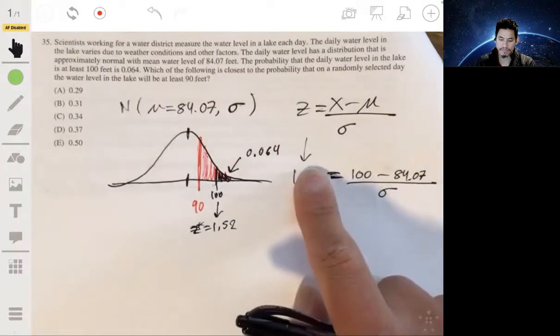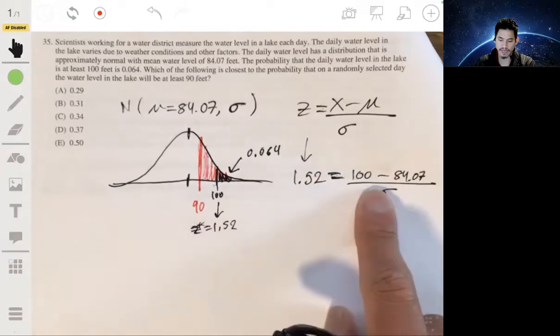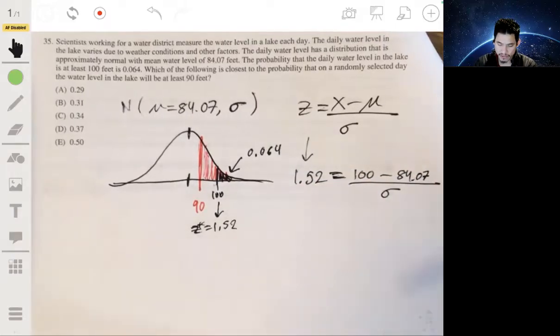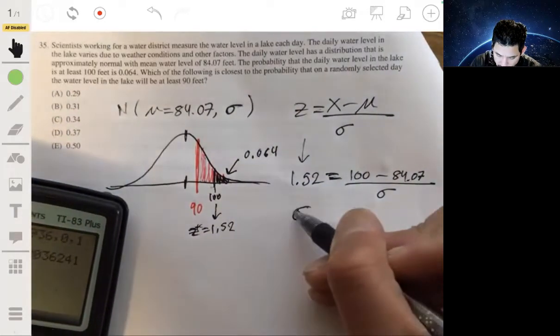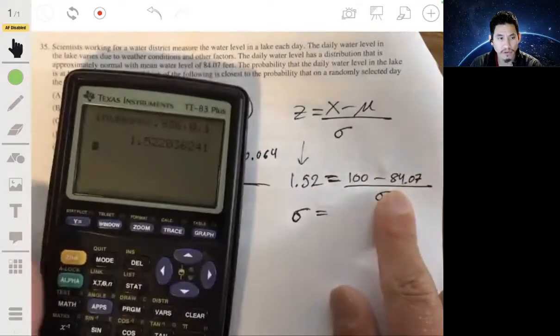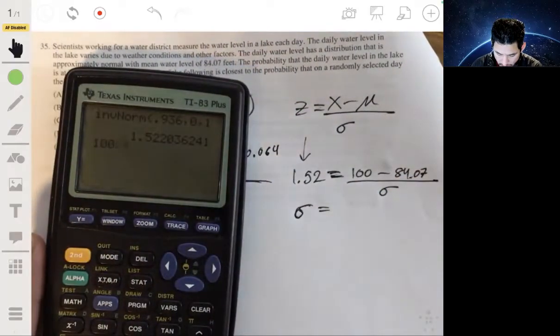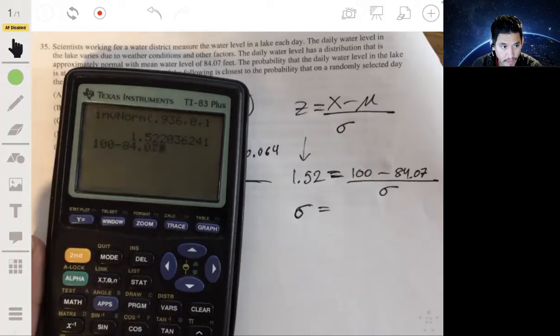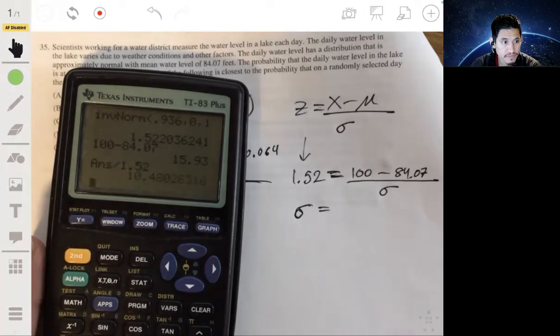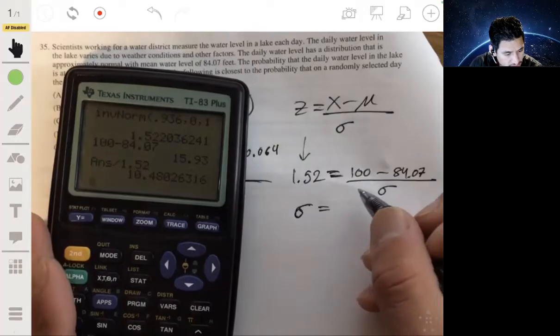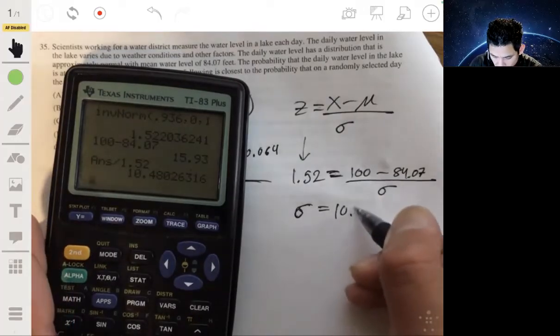Solving for sigma, multiplying both sides and then dividing by 1.52. So we have sigma equals 100 minus 84.07 divided by 1.52. And we get that sigma would be about 10.48.